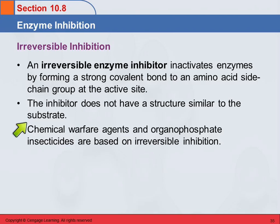The inhibitor does not have to have a structure similar to the substrate — it could be completely different. It doesn't have to come in and dock like a spaceship landing on a space station. It doesn't have to fit, because those intermolecular attractions that hold the normal substrate are not what's coming into play here. It's actually forming a covalent bond with one of the side chains.